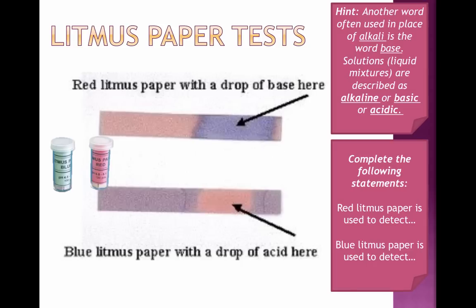Those are two ways that we detect substances to find out if they're acids or alkalis, to help us categorize them and learn more about their properties. You can also do this with red cabbage - you can use flower petals too. We're going to be playing around with some of that in class.